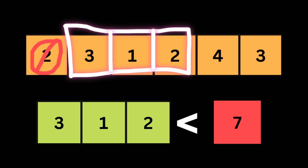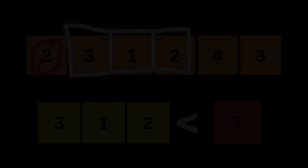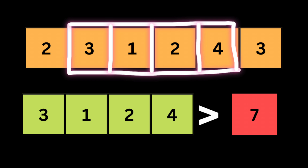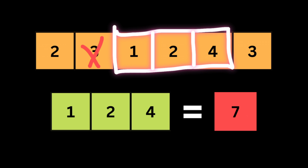Now the current sum inside the window is bigger than the target, so we make the window smaller by removing the first number and checking again. The total after removing the first number is three plus one plus two, which equals six — still smaller than the target. So we add the next number to the end: three plus one plus two plus four equals ten, which is bigger than the target seven, so we shrink the window again.